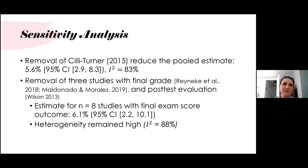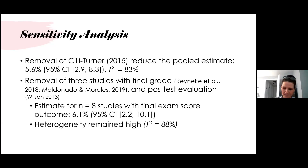This reduced the pooled estimate slightly to 6.1% but not meaningfully, and heterogeneity still remained quite high at 88%. This suggests that having different performance outcomes among our studies did not meaningfully impact the variability of effects across studies, and supported our choice to combine all 11 studies in the primary analysis.